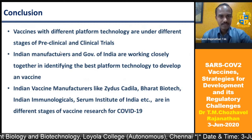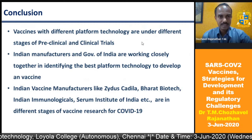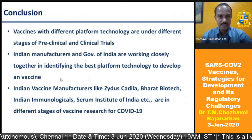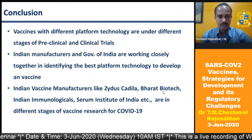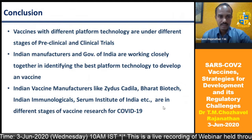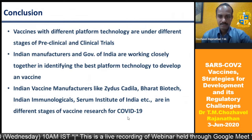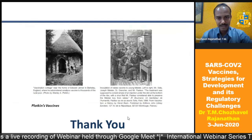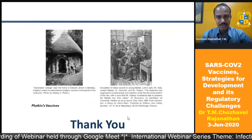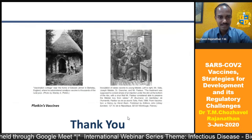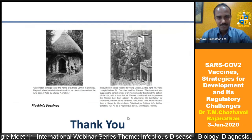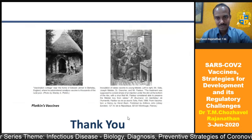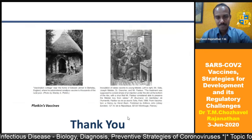In conclusion, vaccines with different platform technologies are under various stages of pre-clinical and clinical trials. Indian manufacturers and the Government of India are working closely together to identify the best platform technologies. Indian manufacturers like Zydus, Candila, Bharat Biotech, Indian Immunological, and Serum Institute of India are in different stages of vaccine research for COVID-19. Thank you — and these pictures are of Edward Jenner's vaccine cottage from the 17th century and Pasteur giving the rabies vaccine.